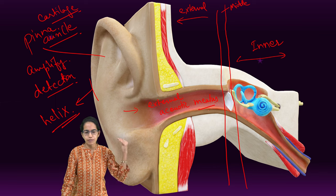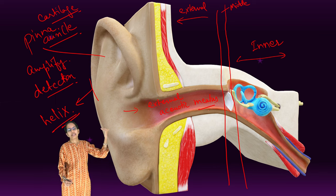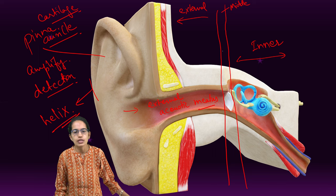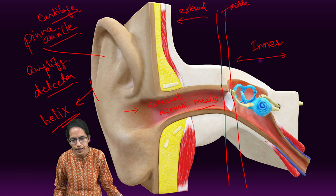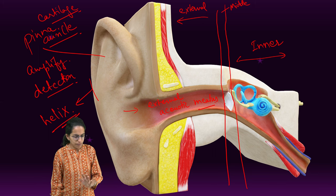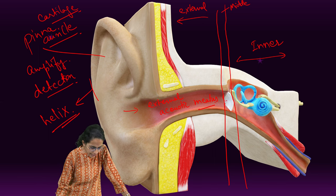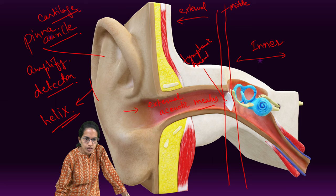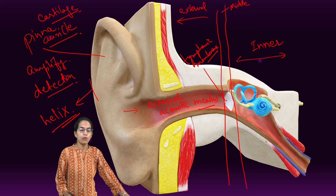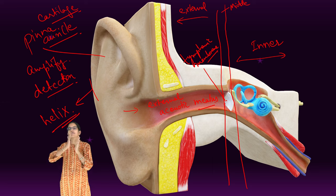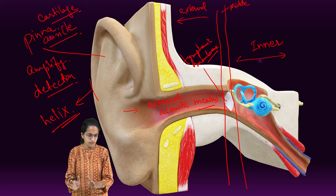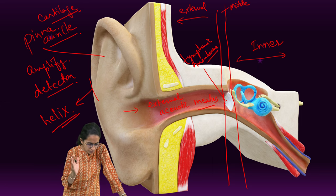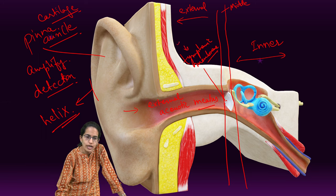The external acoustic meatus is the canal that takes the sound waves to the tympanic membrane. There are two important membranes on either side, and the tympanic membrane is located here. The tympanic membrane is the point where the external ear ends and the middle ear starts.